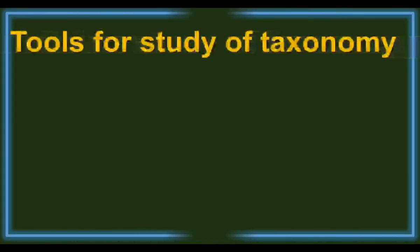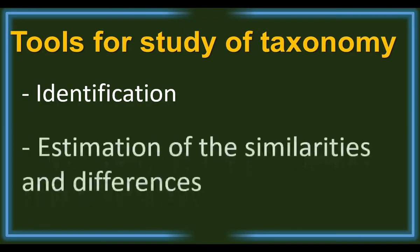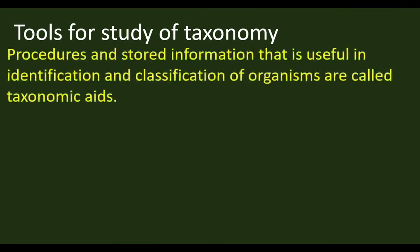Welcome to the biology class. In this video we are going to see the last part of Biozoology Unit 1. We will study the tools for study of taxonomy. Taxonomy includes identification of organisms and understanding the similarities and differences among organisms. For this purpose, some tools are used, called taxonomic tools. Procedures and stored information that is useful in identification and classification of organisms are called taxonomic aids.